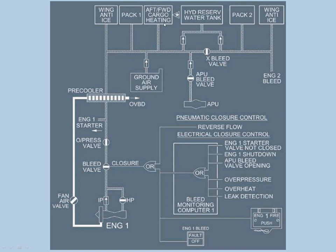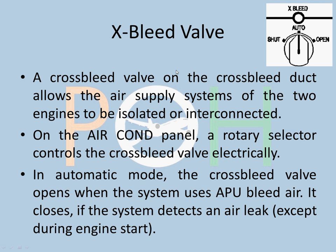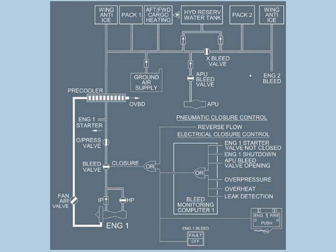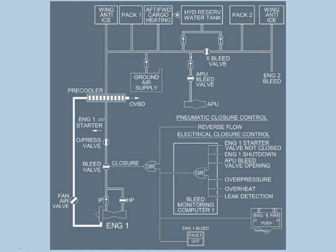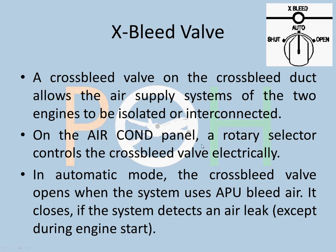Now let's talk about the cross bleed valve. The cross bleed valve is in a cross bleed duct that allows the air supply systems of the two engines to be isolated or interconnected. It is a valve between engine one and engine two that allows you to either isolate or connect both engine supplies. Always remember that the APU and the ground supply are towards the left of the cross bleed valve — this is very important when dealing with leak-associated failures on the air conditioning panel.